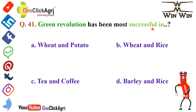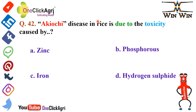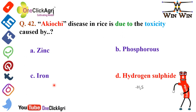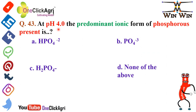Question number 41: Green Revolution has been most successful in wheat and rice — please remember this. Question number 42: Akiochi disease in rice is due to toxicity caused by hydrogen sulfide (H2S). The other options — zinc, phosphorus, and iron — have been discussed in previous lectures of the article series, so please go back and watch those.